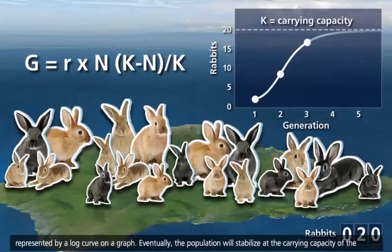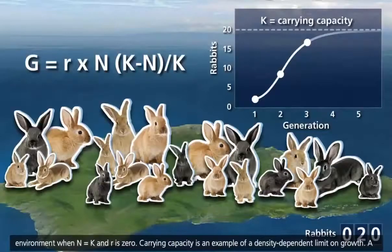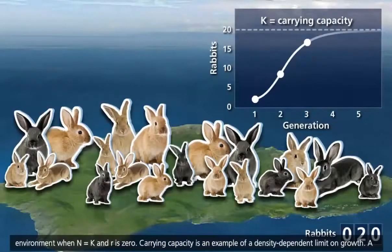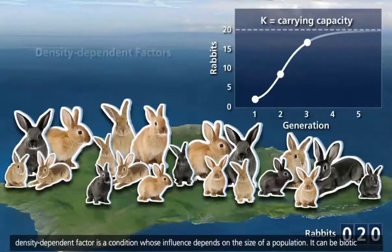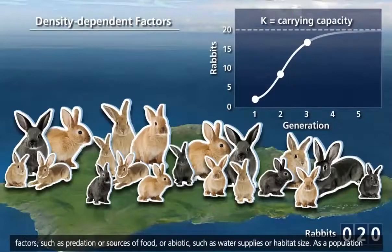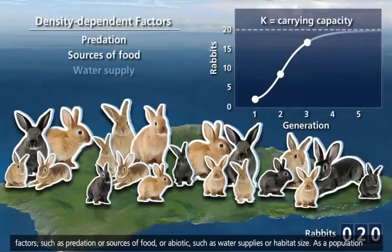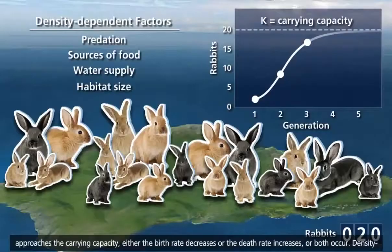Eventually, the population will stabilize at the carrying capacity of the environment, when n equals K and R is zero. Carrying capacity is an example of a density-dependent limit on growth. A density-dependent factor is a condition whose influence depends on the size of a population. It can be biotic factors, such as predation or sources of food, or abiotic, such as water supplies or habitat size. As a population approaches the carrying capacity, either the birth rate decreases or the death rate increases, or both occur.